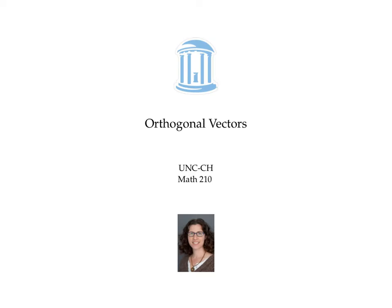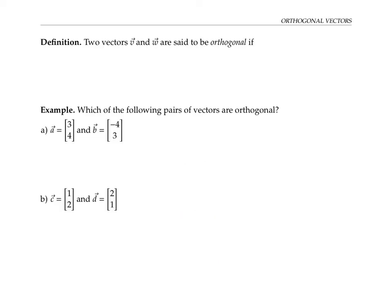This video introduces orthogonal vectors. Two vectors V and W are said to be orthogonal if their dot product is equal to zero.